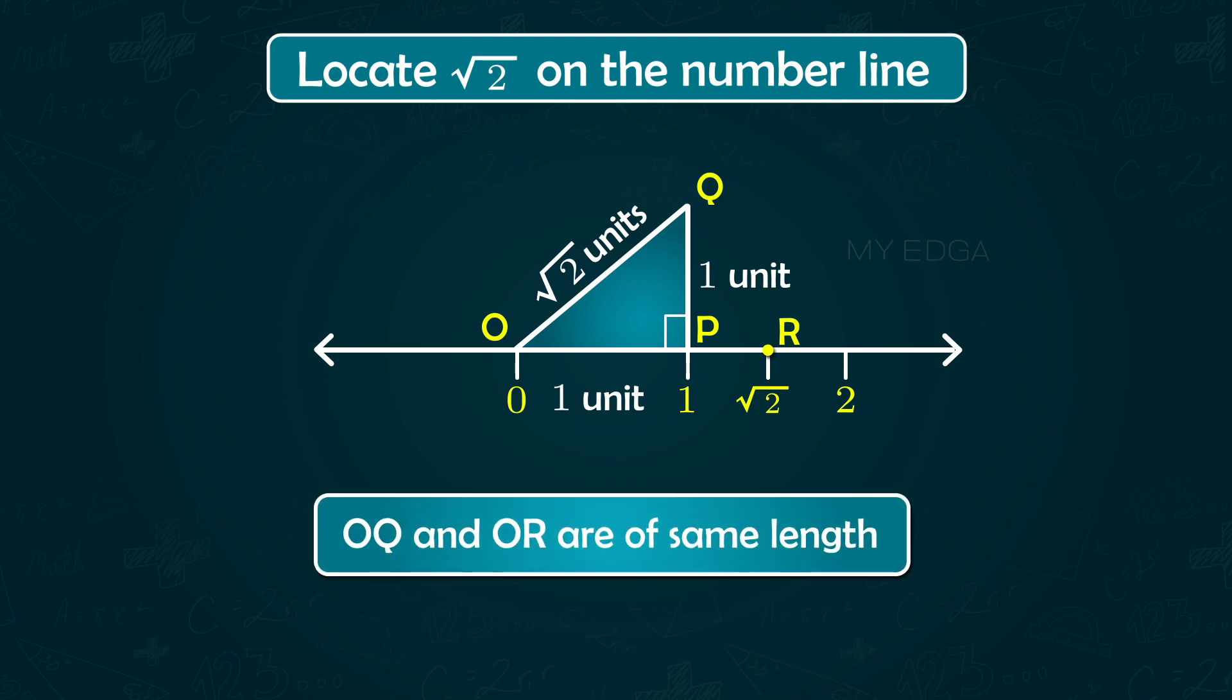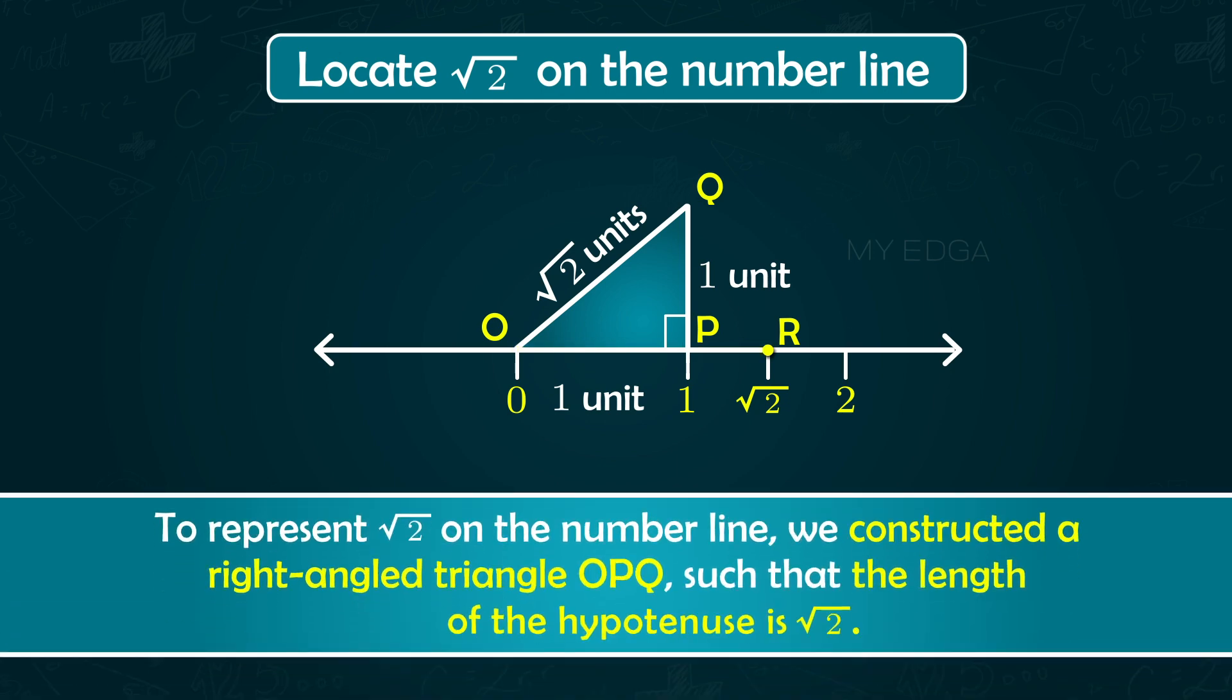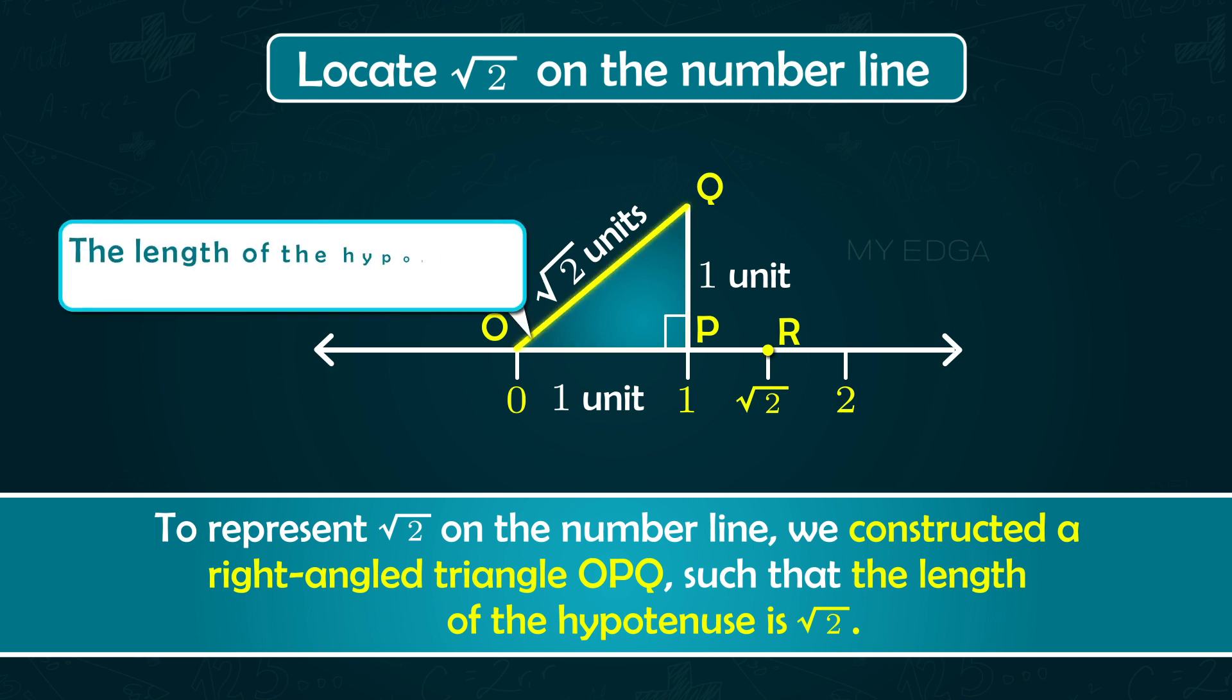So we located the irrational number √2 on the number line. So to represent √2 on the number line, we constructed a right-angled triangle OPQ such that the length of the hypotenuse is √2.